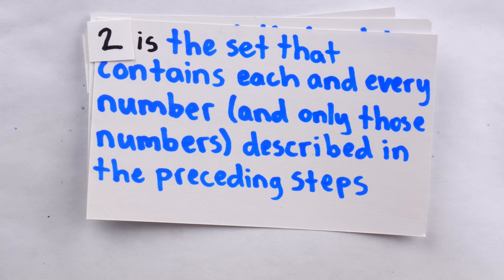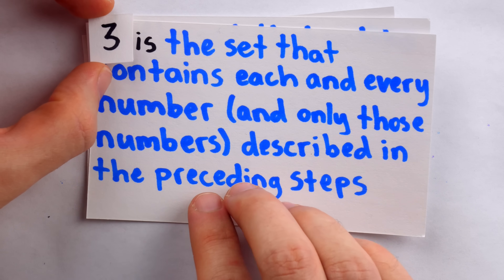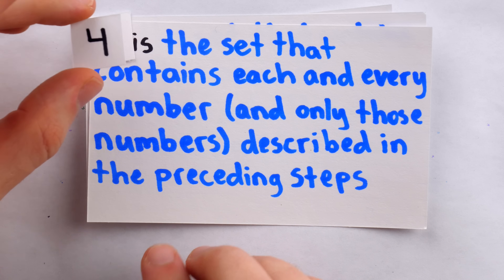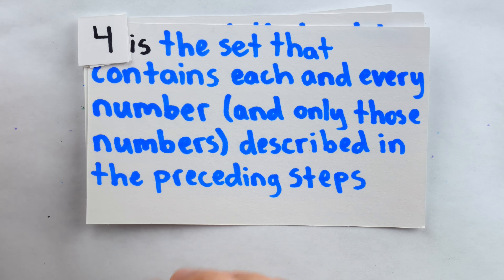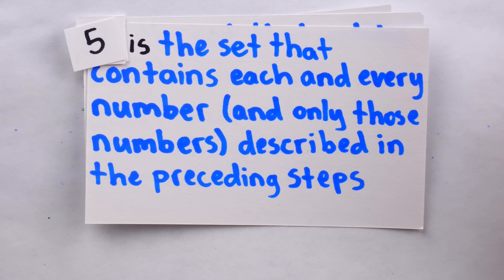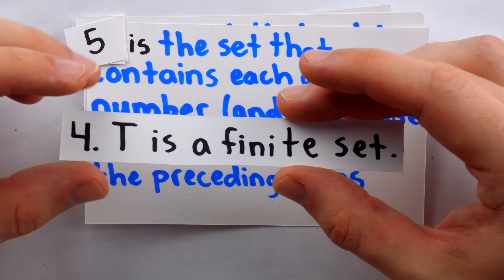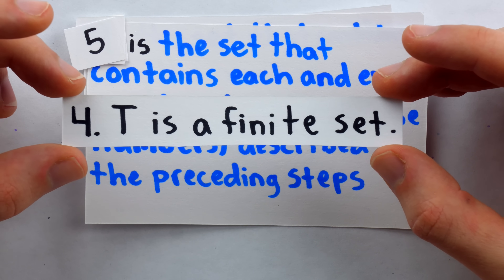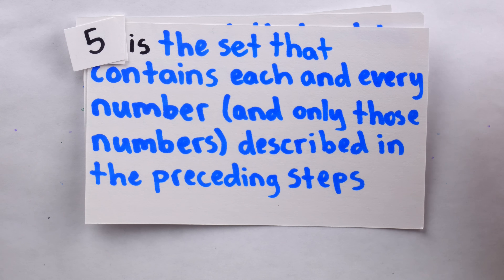And now you can see where this is going. How shall we describe 3? Well, 3 is the set that contains each and every number, and only those numbers, described in the preceding steps. And 4? 4 is the set that contains each and every number, and only those numbers, described in the preceding steps. And there we go. Barry's paradox has been resolved. The key premise which was causing the contradiction is that a finite number of descriptions does not necessarily have to describe a finite set of numbers. We can, with a very limited number of descriptions, describe as many numbers as we like.